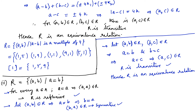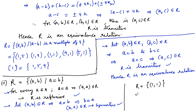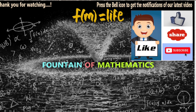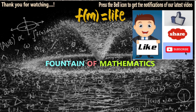Now for the elements related to 1 under R₂: since R₂ = {(a, b) : a = b}, the only pair related to 1 is (1, 1). Therefore the equivalence class of 1 under R₂ is the single element {1}.